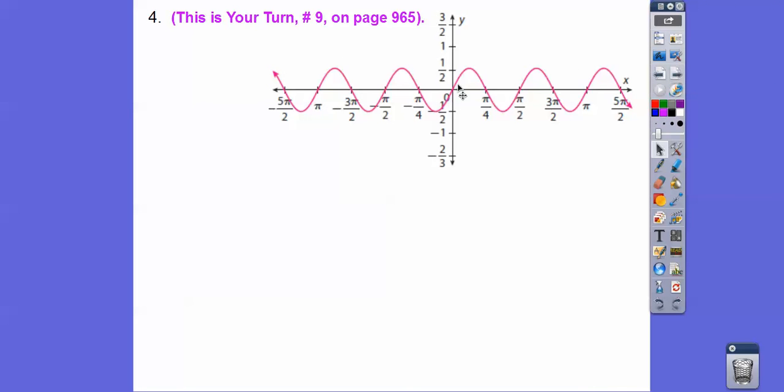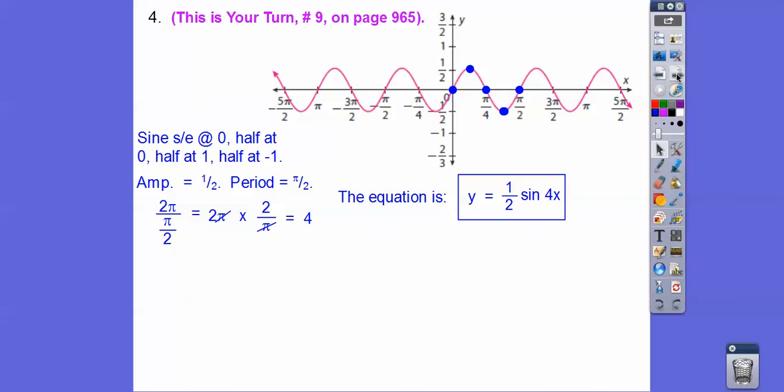Let's try this one. This one goes through the origin. This one's a sine curve. It starts and ends at 0, halfway at 0, halfway at 1 half, halfway at negative 1 half. The amplitude is 1 half. The period goes from 0 to pi over 2. What we're going to do is 2 pi divided by pi over 2, which is 2 pi times 2 over pi. We invert and multiply. We get 4. That's the number that goes in front of the angle.